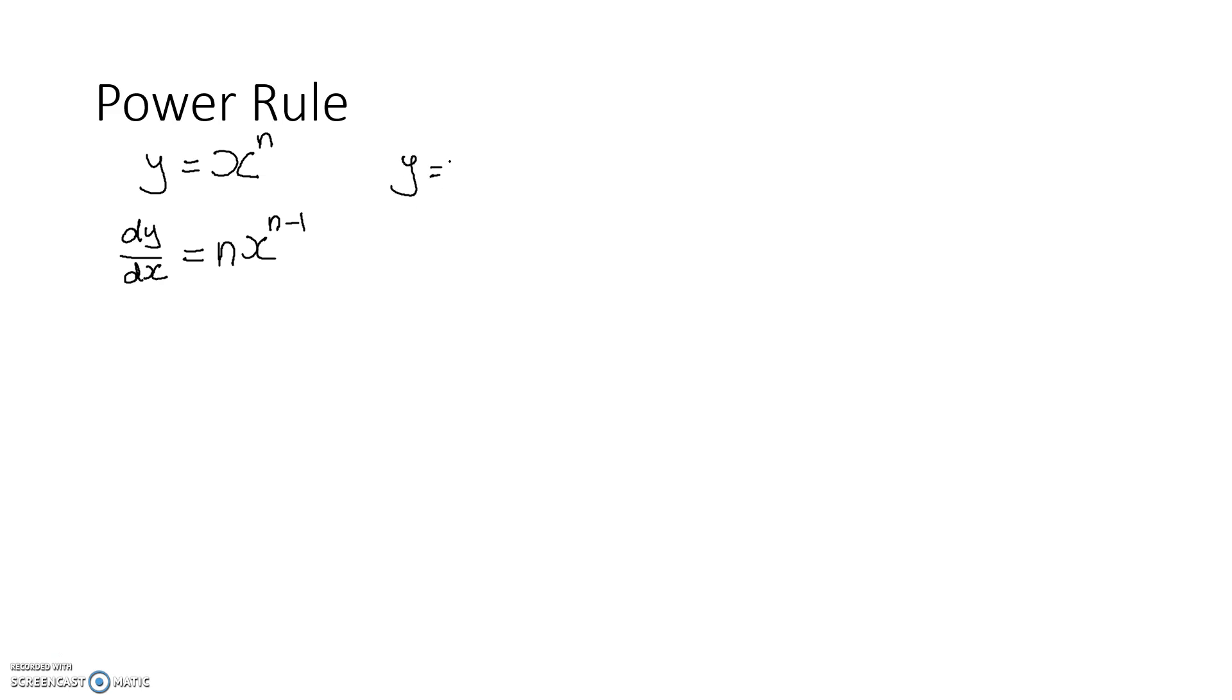Example, if y equals to x square, dy dx equals to bring down 2, x, 2 minus 1 equals to 1, and 2x over here. Now, this step, you can skip it once you are familiar with it. Now, next one, for example, one more practice. If y equals to x power 3, dy over dx equals to 3x, 3 minus 1 equals to 2, you get 3x square.